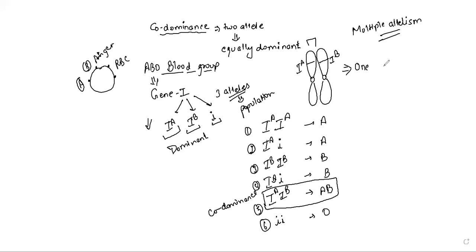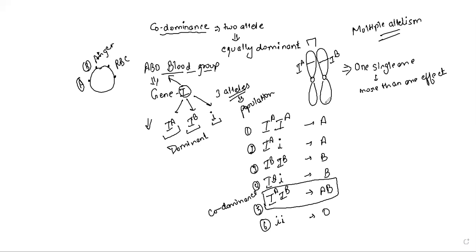Another situation given in NCERT is that one single gene is going to produce more than one effect — that is pleiotropy. We are talking about one gene here producing one effect, like blood group only. But many times one function causes another function to be affected automatically. Example: in pea seeds, starch synthesis is controlled by one single gene.